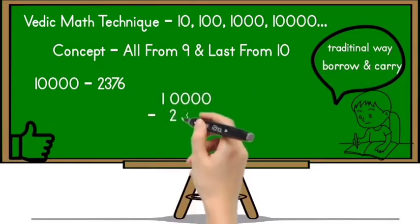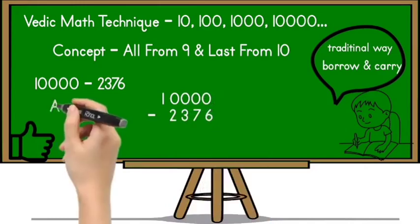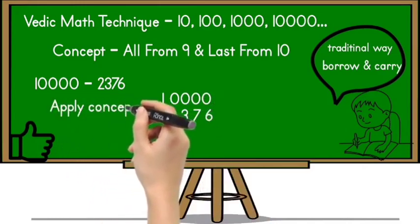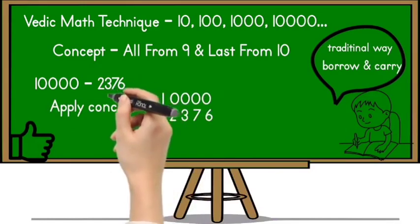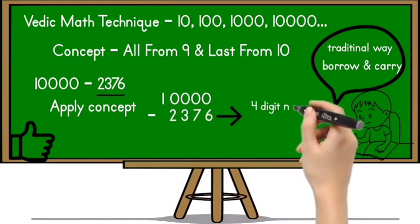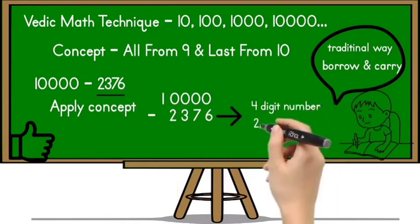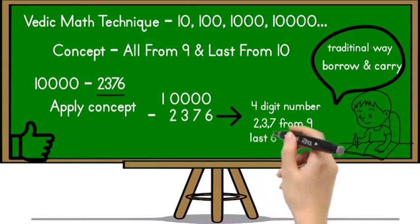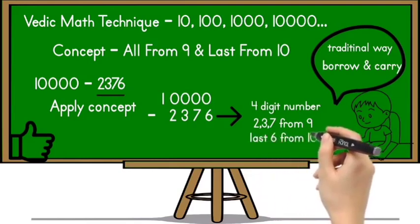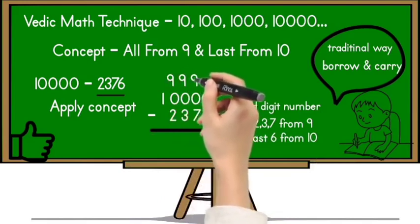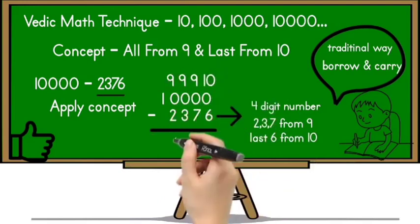So arrange this subtraction vertically and use the concept on it. Now focus on 2376. It is a four digit number. So according to the concept we have to subtract first three digits, that is 237 from 9, and the last digit 6 from 10. So apply on it now.